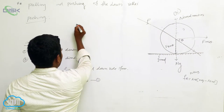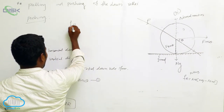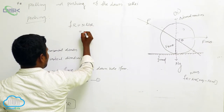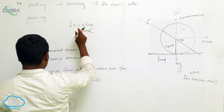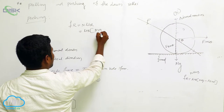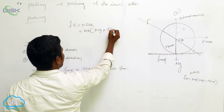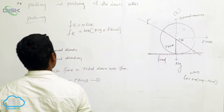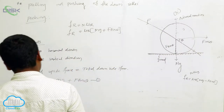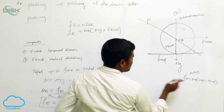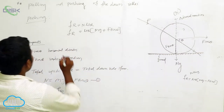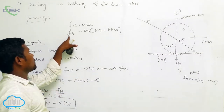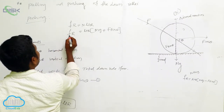Substituting the value of N, we get Fr = N × μr, where N = mg + f sin θ. So for the pushing case, the rolling friction equation is Fr = μr(mg + f sin θ). This is the equation for the pushing case.